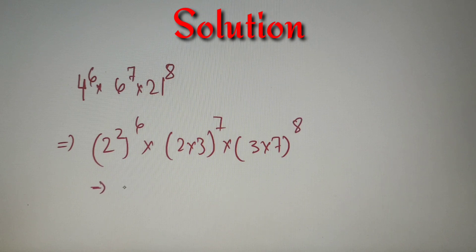So basically we can say that the number is equal to 2 raised power 12 into 2 raised power 7 into 3 raised power 7 into 3 raised power 8 into 7 raised power 8.